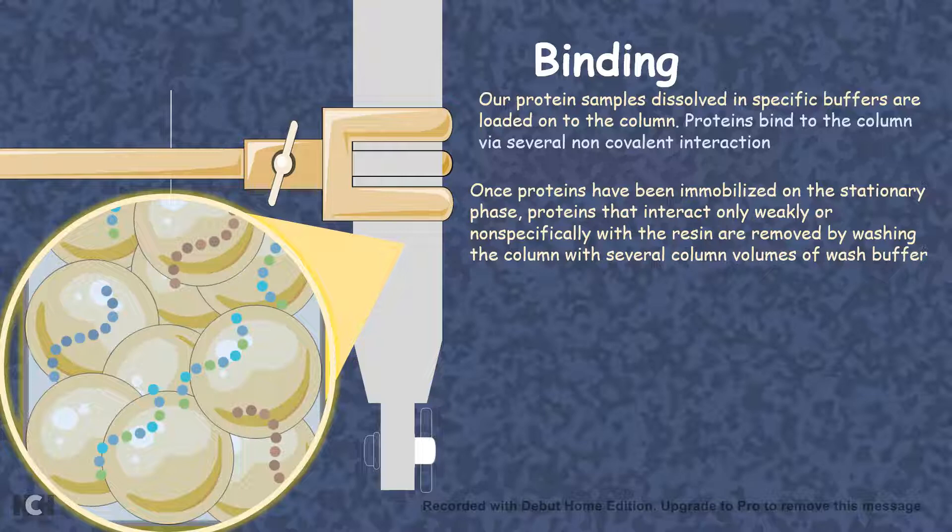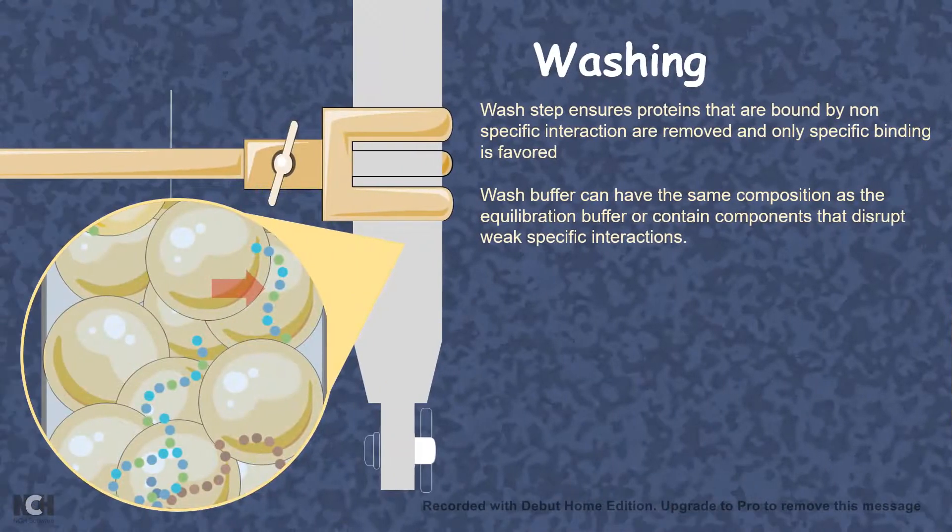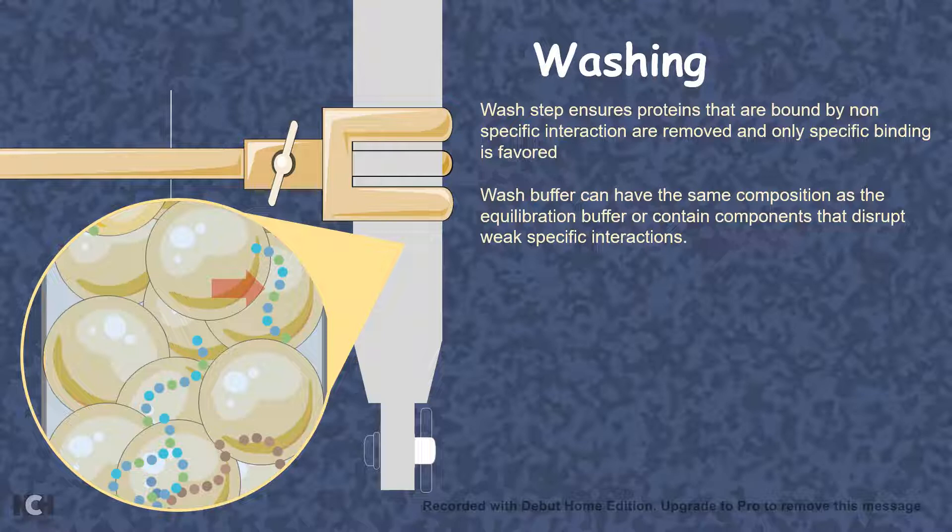The next step is washing. In the washing step, all the non-specific interactions are washed away, and only the interactions which are very specific and strong are retained. In wash buffer we can use some compositions like denaturants which would get rid of all the weak interactions but not the strong interactions. In order to disrupt the weak interactions, we have to choose our denaturants very carefully.